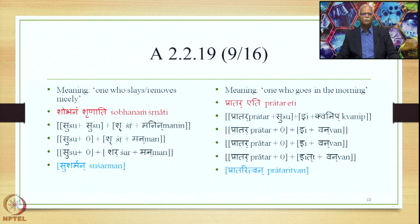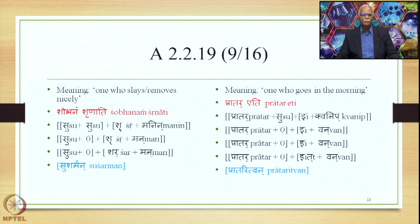When the meaning to be expressed is 'one who slays or removes nicely' (shobhanam shranati), we have Su plus Su plus Shuru plus Manin as the Alaukika Vigraha. Samasa Saudhanya takes place, Pratipadika Saudhanya also takes place, and Supodhatu Pratipadika Yoho applies, deleting Su in the Purvapada. So we have Su plus zero plus Shar plus Manin, and finally we get Susharmanin as the compound output, meaning 'one who slays or removes nicely.'